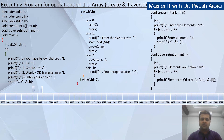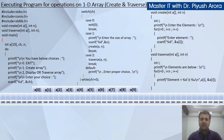The array elements are A[0], A[1], A[2], A[3], A[4], A[5], A[6], A[7], A[8], and A[9].